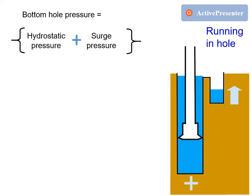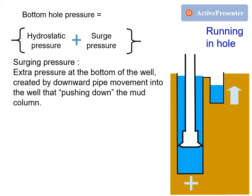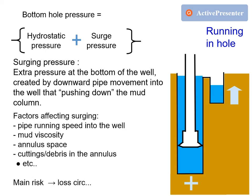Bottom hole pressure while running in hole is equal to hydrostatic pressure plus surge pressure. Surge pressure is the extra pressure at the bottom of the well created by downward pipe movement into the well that pushes down the mud column. Factors affecting surging are pipe running speed into the well, mud viscosity, annulus space, cuttings and debris in the annulus, and a few other things.